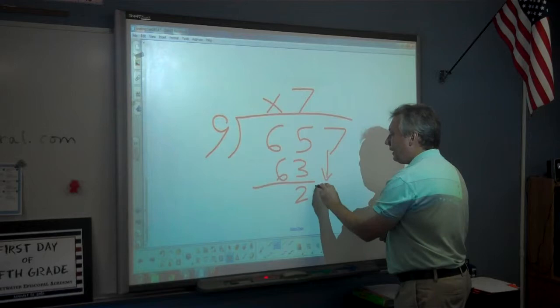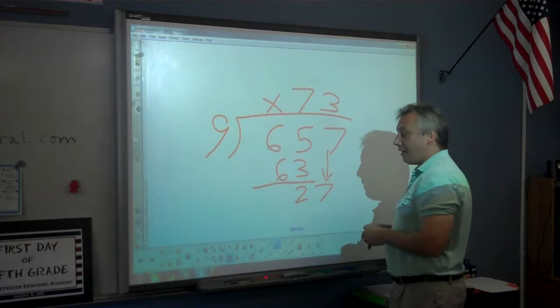We bring down the next number and that forms 27. 9 goes into 27 three times. When there is nothing else to bring down, that's when you know you're done.